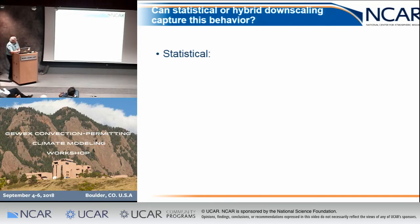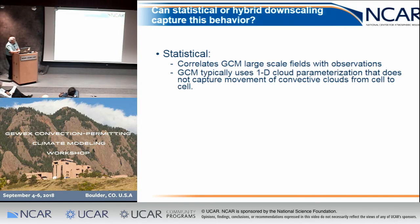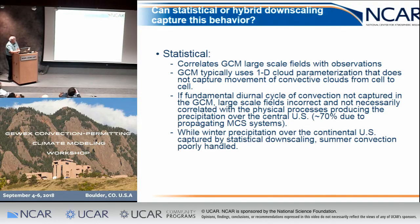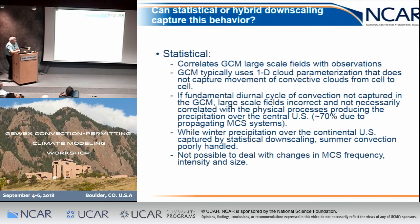To conclude: can statistical or hybrid downscaling capture this behavior? Not really. Statistical downscaling correlates with GCM large-scale fields, but GCMs use a simple 1D cloud parameterization that doesn't capture MCS-type storms. The diurnal cycle of convection is not captured, nor is intensity or frequency — especially over the United States. Winter precipitation tends to be better handled by statistical downscaling, but summer convection is poorly handled.